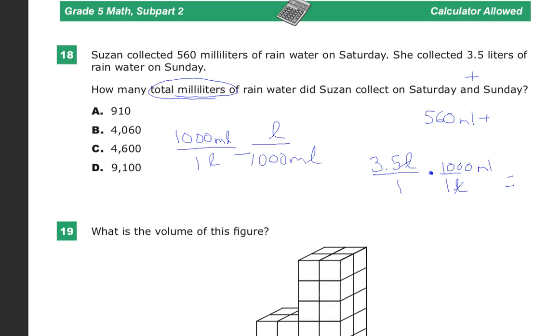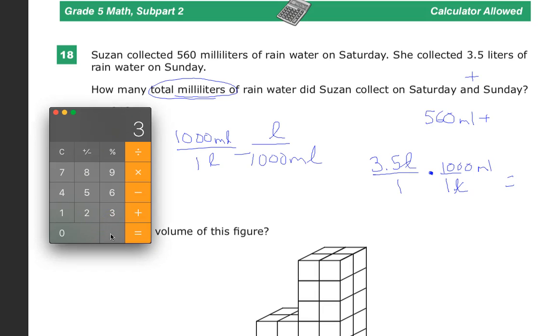And since I'm allowed to use a calculator, why not? A calculator is just a tool, so if you use it appropriately, it's not a negative, but it's not going to solve all your problems either. This gives me 3,500 milliliters.